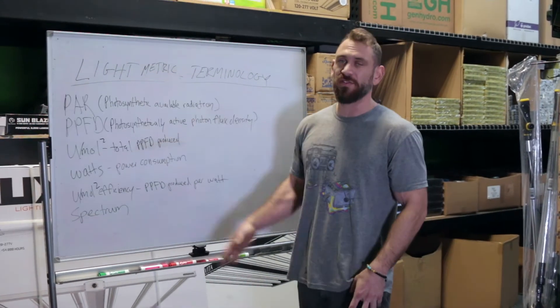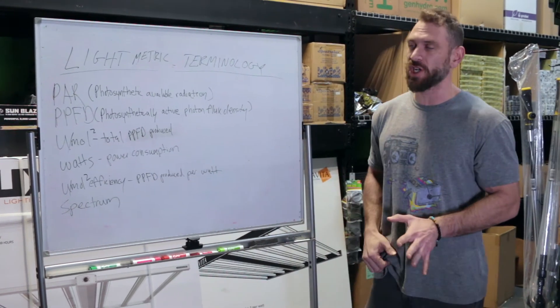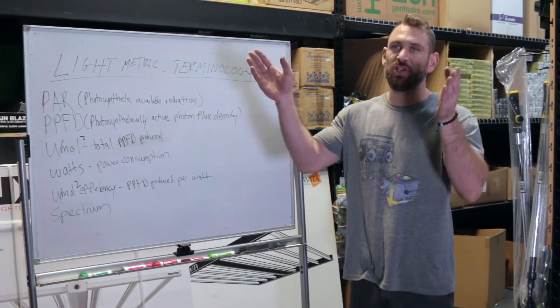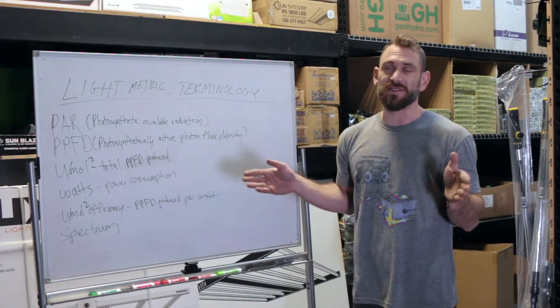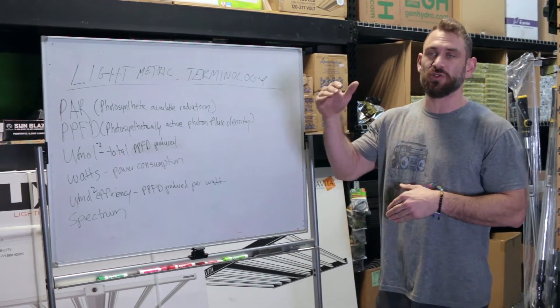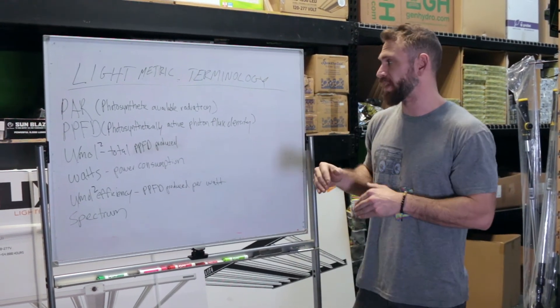So we're going to start with PAR, which stands for Photosynthetically Available Radiation. All this is referring to is the spectrum of the light that the plants can actually use. It's not an actual metric to measure the intensity of the light.